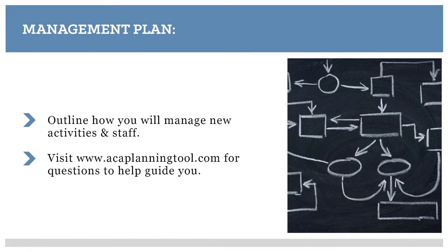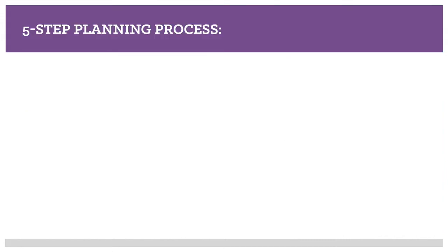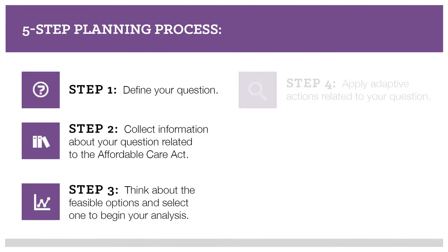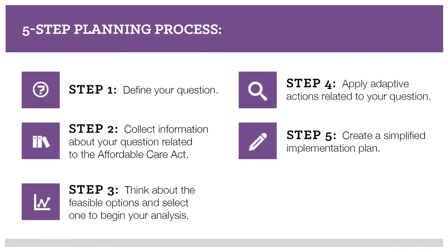Questions to begin thinking about the development of your management plan are included in the MCH planning tool module. This five-step process can be used with any challenging question for which there may not be a ready solution, not just questions about health reform. The process takes time, but it can lead to a higher level of thinking than merely reaching for the easier technical solution. Remember our question: how can Title V professionals broker improvements for the well-being of mothers and children, including those with special needs?